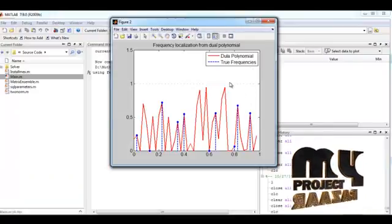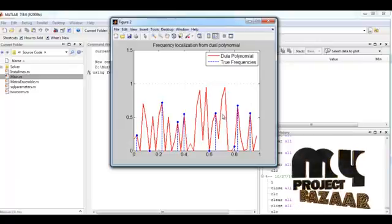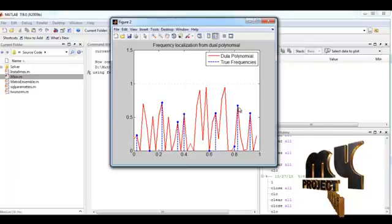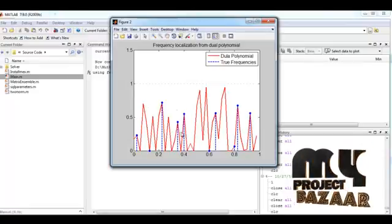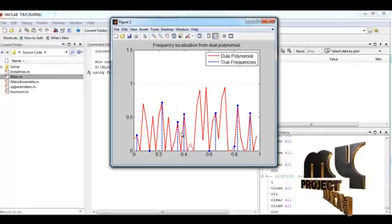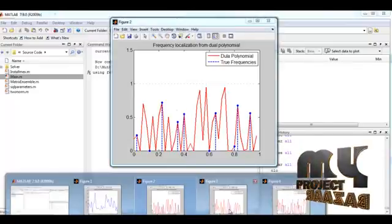This is the frequency localization representation from dual polynomial. Here we plotted the graph for true frequencies and the particular waveform represents the dual polynomial representation.